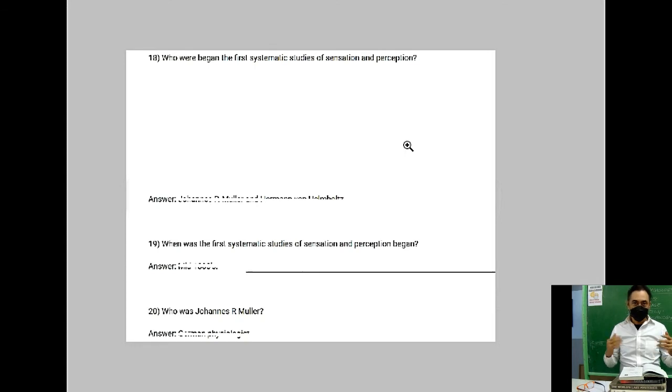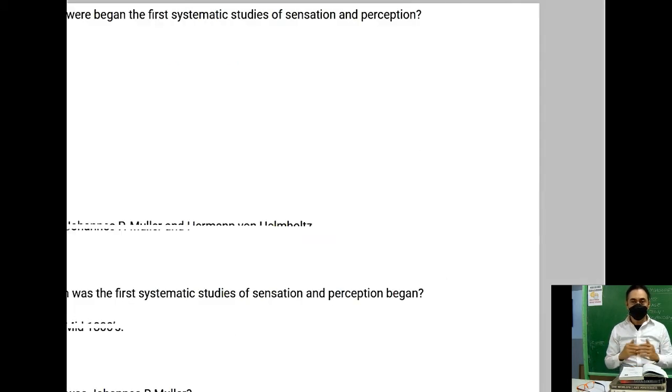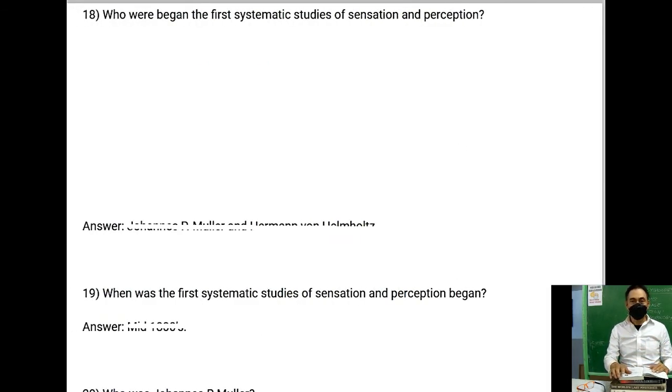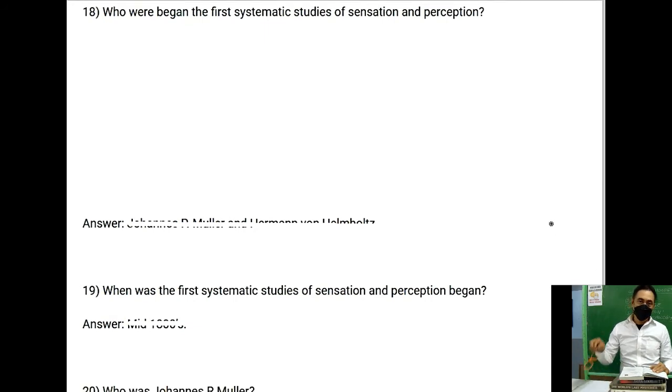Number 18: Who began the first systematic studies of sensation and perception? Number 19: When was the first systematic studies of sensation and perception began? Number 20: Who was Johannes Müller?